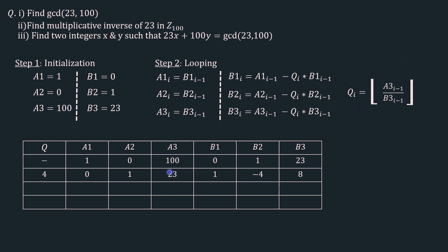We calculate q_2 = floor(a3 / b3) = floor(23 / 8) = floor(2.something) = 2. The new a values become the previous b values: 1, −4, and 8. Now observe the pattern: b1 = 0 − 2×1 = −2, b2 = 1 − 2×(−4) = 1 + 8 = 9, and b3 = 23 − 2×8 = 7. The pattern is: take the previous a and subtract the product of the current quotient and the previous b — which is the formula b(i) = a(i-1) − q(i)·b(i-1).